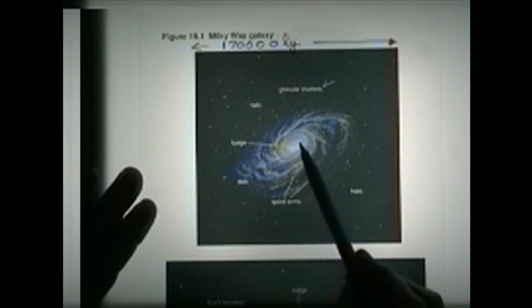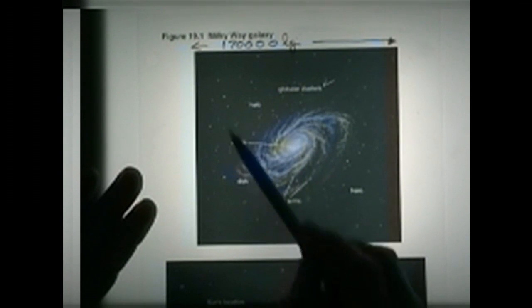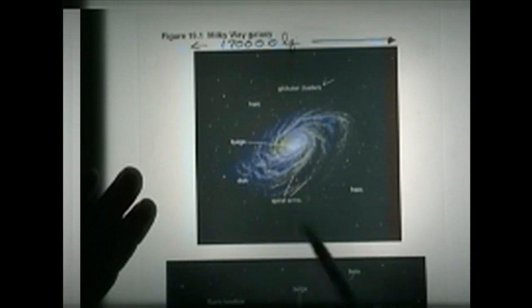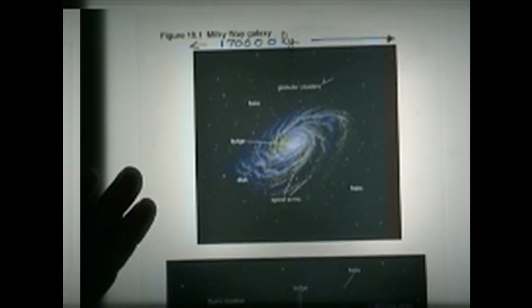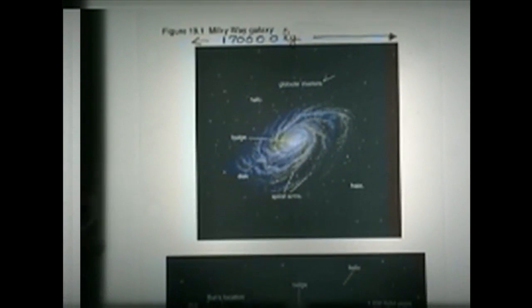There is a central bulge here. The region above and below the disc is called a halo. It turns out that the halo of our galaxy is filled with these massive, numerous globular clusters that contain a large number of stars.